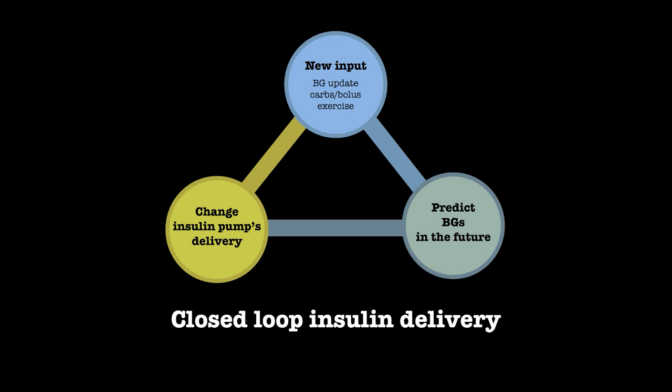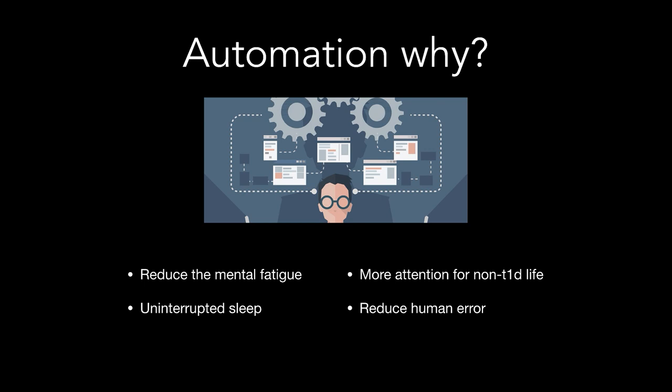That's what closed loop insulin delivery is: taking new inputs, making predictions, and changing insulin delivery. So why wouldn't we want to automate it? Automation could reduce the mental fatigue of making constant decisions, allow uninterrupted sleep — if you're trending low, the pump could reduce insulin on its own — give you more time for the non-diabetes parts of your life, and reduce human error from sleep deprivation.